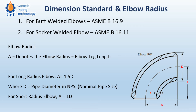For those unfamiliar with dimension standards, a dimension standard is a standard book available in the market. ASME B16.9 is the authority that provides standard dimensions for a given elbow. For example, for a 6-inch elbow with schedule 40 thickness made of carbon steel, specific dimensions will apply. These dimensions include 'D' — the diameter — and 'A', which is the leg length or radius dimension of the elbow.